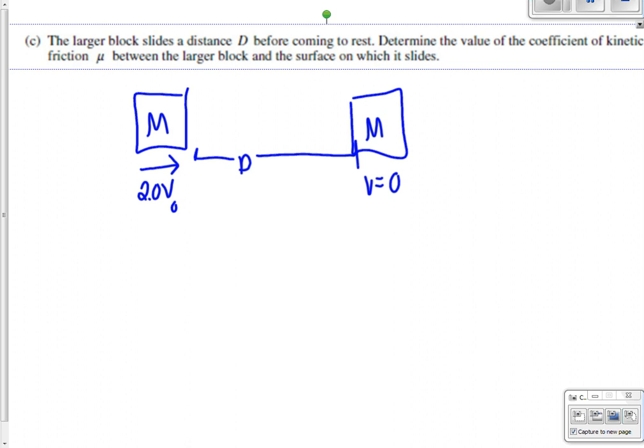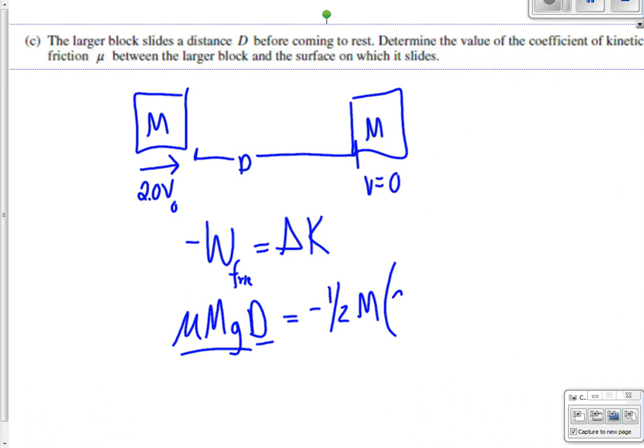So all of the energy is lost. So we know that the work, the negative work done by friction has to be equal to the change in k of that block. That's why it's negative because k is getting smaller. So that means force of friction. So mu times m times g times d, right? Force times distance equals work equals negative one half m 2v initial squared.